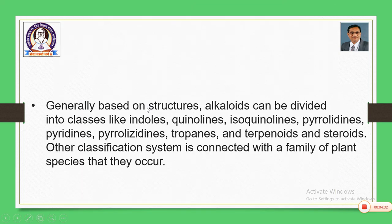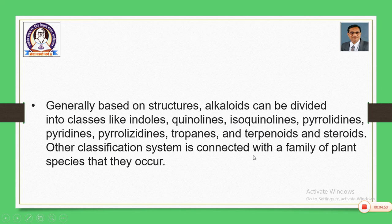How are alkaloids classified? Generally, based on structure, alkaloids can be divided into classes like indoles, quinolines, isoquinolines, pyrrolidines, pyridines, pyrrolizidines, tropanes, terpenoids, and steroids. Another classification system is connected with the family of plant species in which they occur.